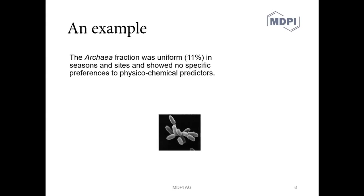So here's our first example. The Archaea fraction was uniform in seasons and sites and showed no specific preferences to physico-chemical predictors. So this is okay, we can kind of understand what the authors intended. There's a few words here that I think could be improved a little bit. So firstly, in season has a quite specific meaning in English and it's not what the authors intended here. We've got and repeated in the middle of the sentence which is quite often confusing. And I have a bit of an issue with Archaea showing preferences. They're not really animate beings that made a decision about which physico-chemical predictors. So I think we can use something a little bit more simple here.